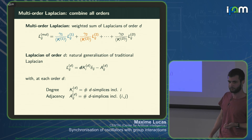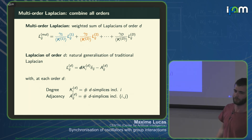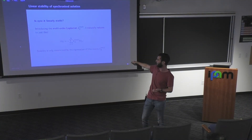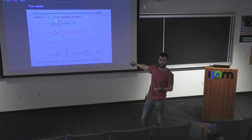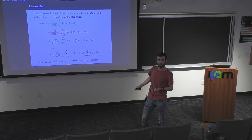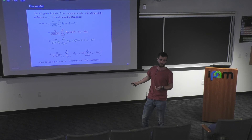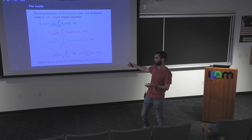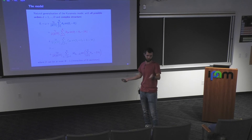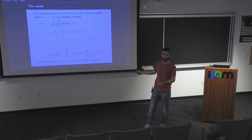Q: So this gamma — is that like epsilon squared? A: Gamma here is the coupling strength. If you go back, gamma_1 is the coupling strength for order one, and gamma_2 is the coupling strength for order two. You don't have to think of it as epsilon and epsilon squared — we set them as free parameters more generally, but we can always set gamma_2 to be gamma_1 squared to recover that case.